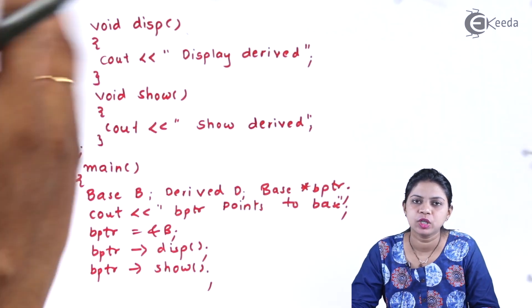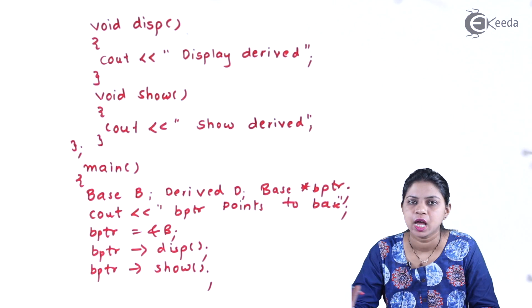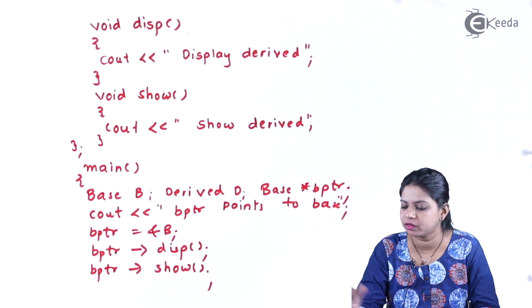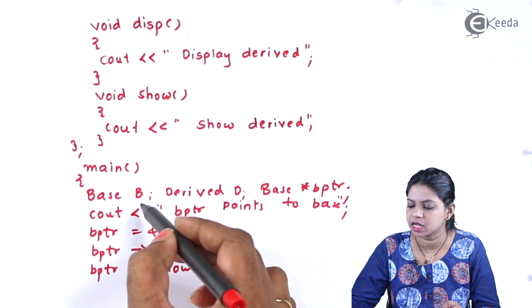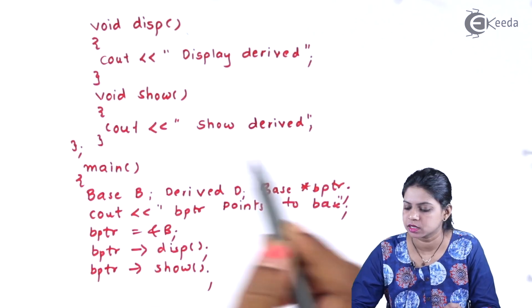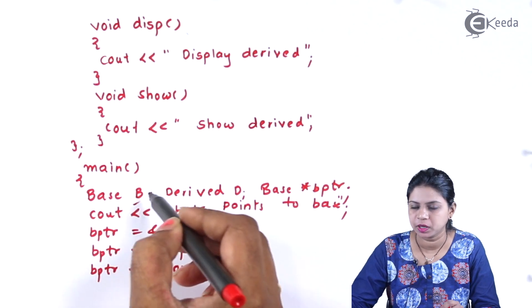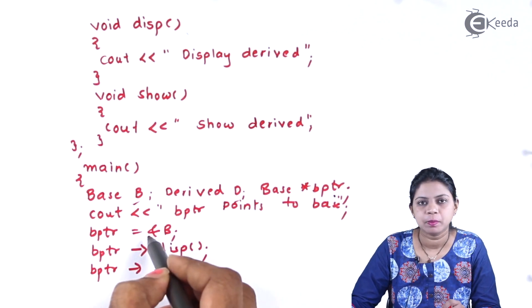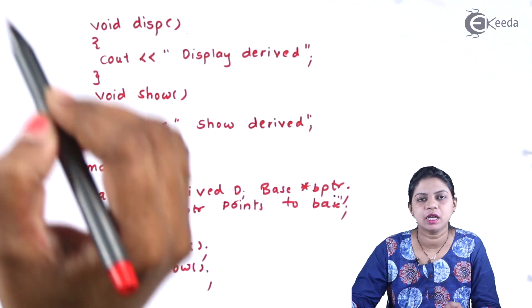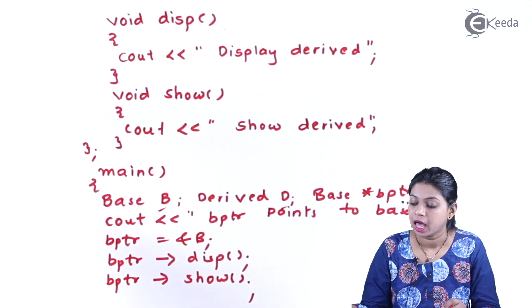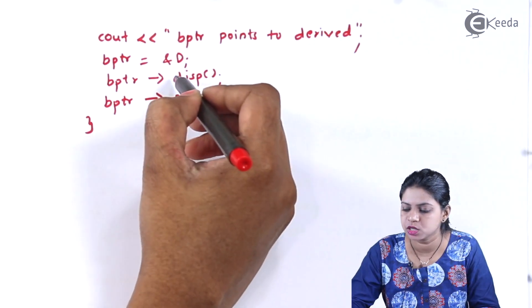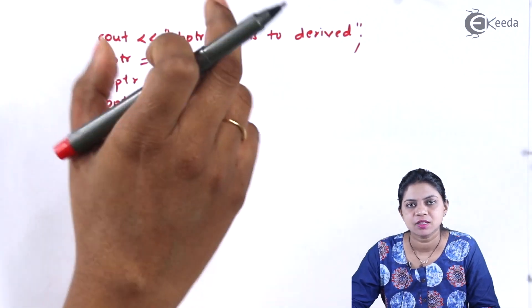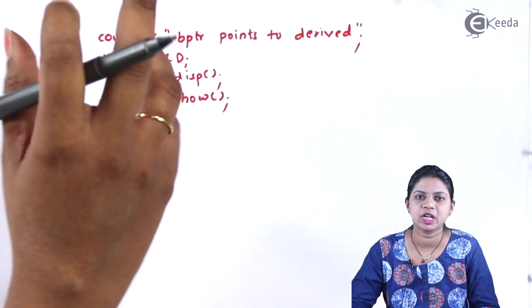By default, only the functions in the base class get called, meaning you won't get the output of the functions in the derived class. To get the output of those functions as well, I will create objects of both classes — object B and object D — and then create a pointer to the base class. When the base pointer points to the base class, the functions of the base class are called; when pointing to the derived class, you would expect the derived functions to be called, but by default you still get the base class answer.